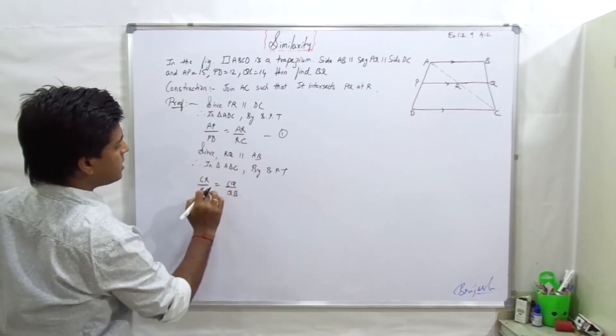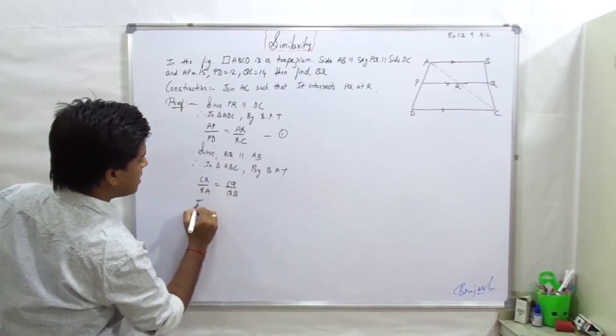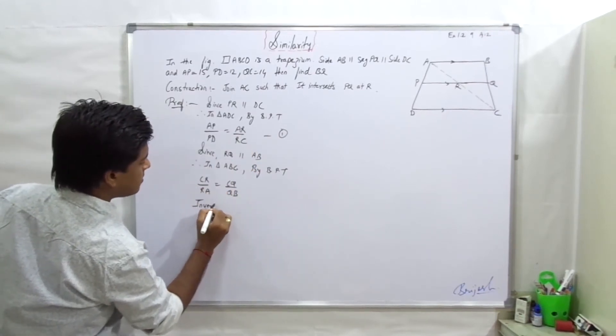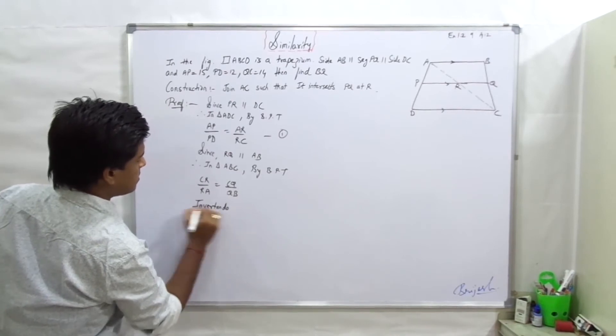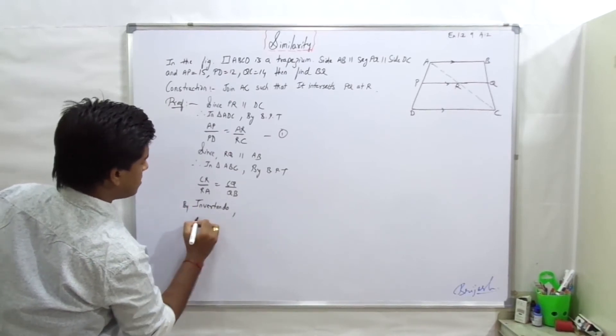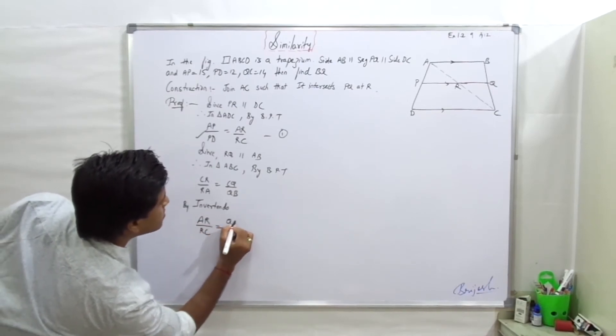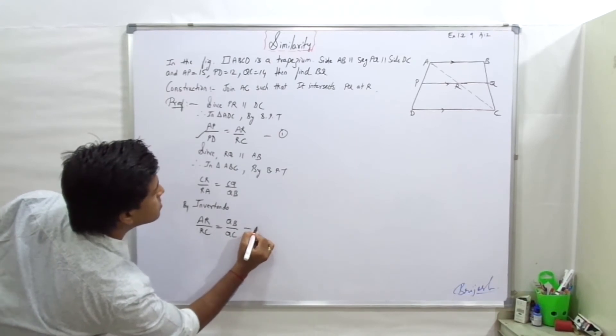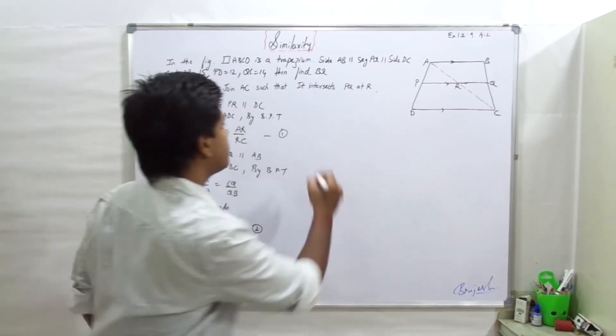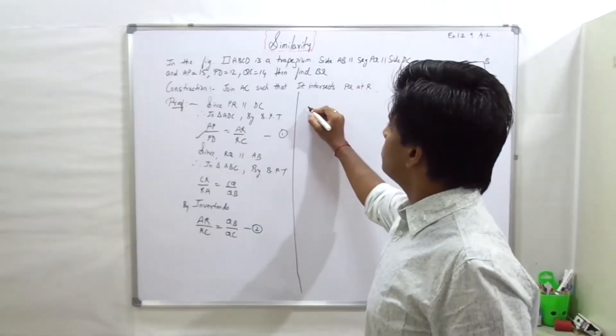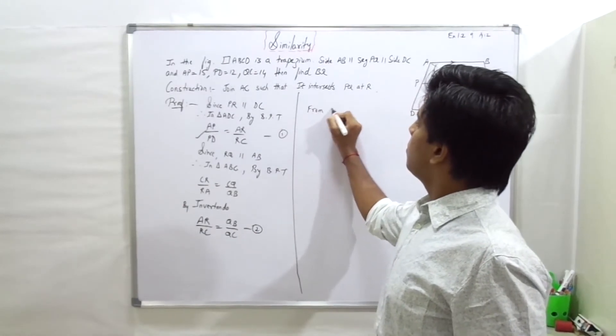So CR and AR, this is what we need to do. Invert and loop, so by inverse and loop, AR upon RC equal to QB upon QC. So equation two. Okay, so from one and two we get: